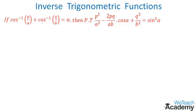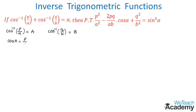The first step is to convert the inverse trigonometric function into a trigonometric function. Let cos⁻¹(P/A) = A and cos⁻¹(Q/B) = B. Transferring cos⁻¹ to the right-hand side gives cos A = P/A — call this equation 1 — and cos B = Q/B — call this equation 2.